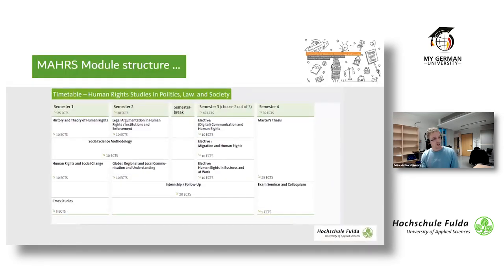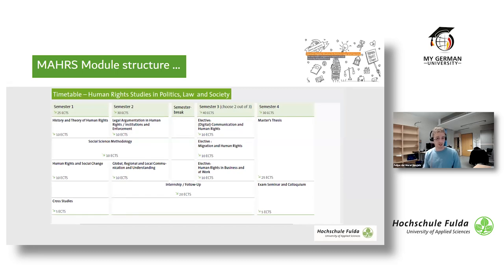MARS is a social science-based, interdisciplinary graduate program examining human rights from many perspectives. During the first year, students study the history and development of human rights, acquire expertise in social science methodology and legal argumentation, and explore human rights in relation to social change and cross-cultural communication. The second year starts with a ten-week internship in Germany or abroad.